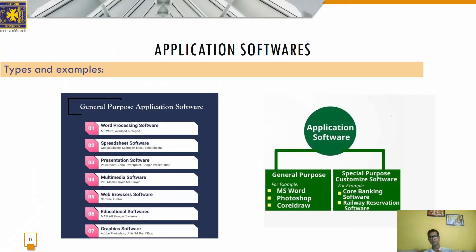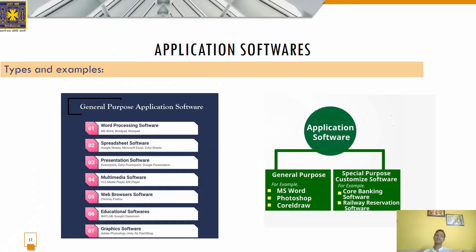Whereas applications that serve customized or specific needs of a certain group of users are called special purpose or customized software. For example, core banking software can serve the information of banking transactions only. Using this software, we cannot book a hotel. It can serve only the banking purpose of specific users whose information are enlisted in that specific application.